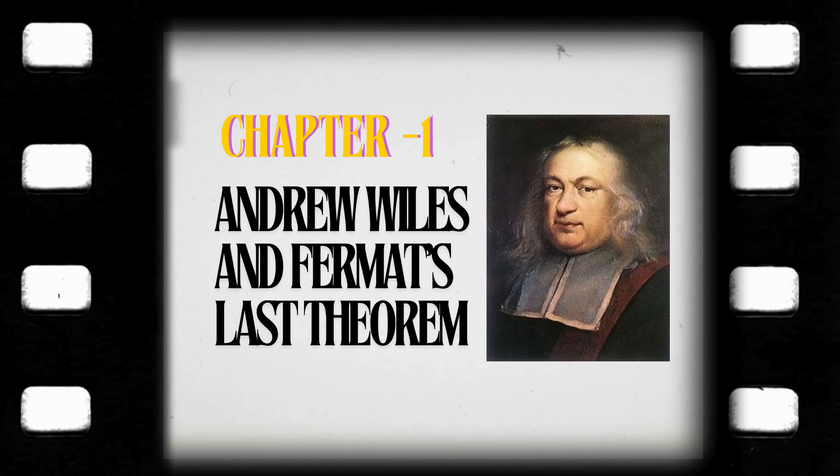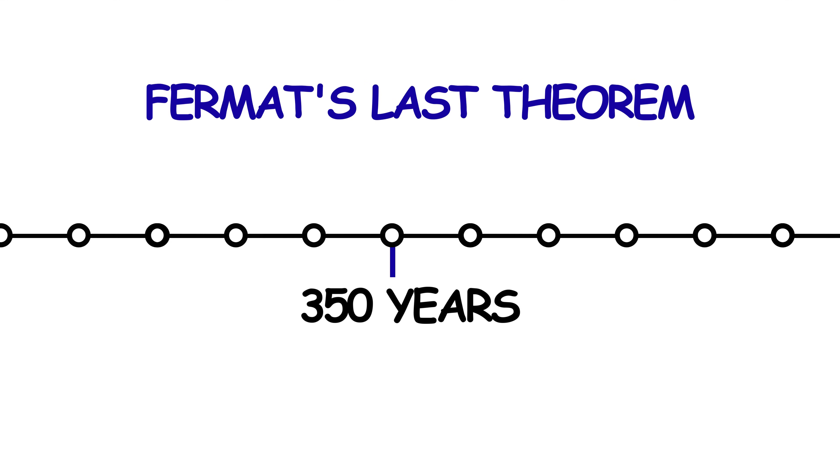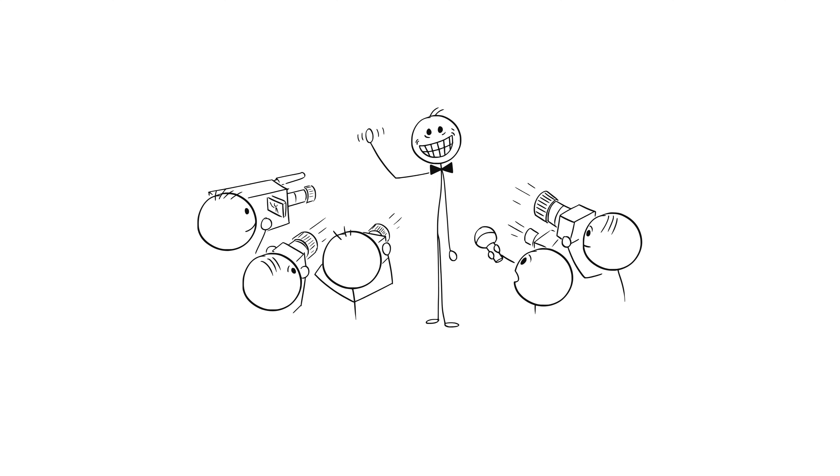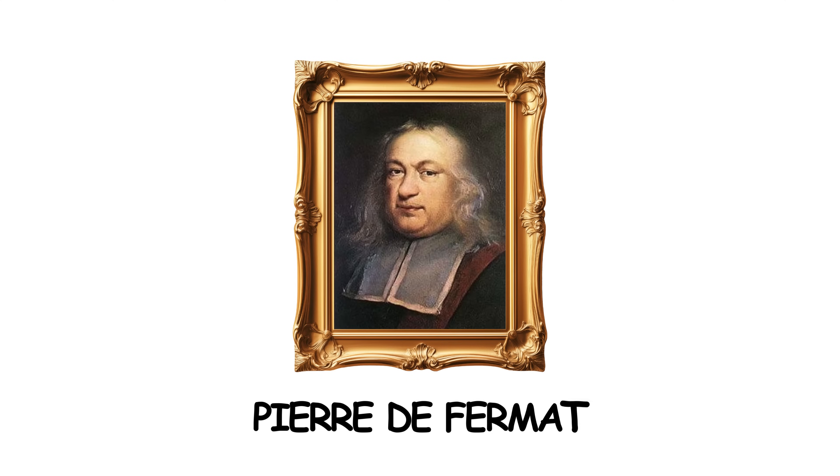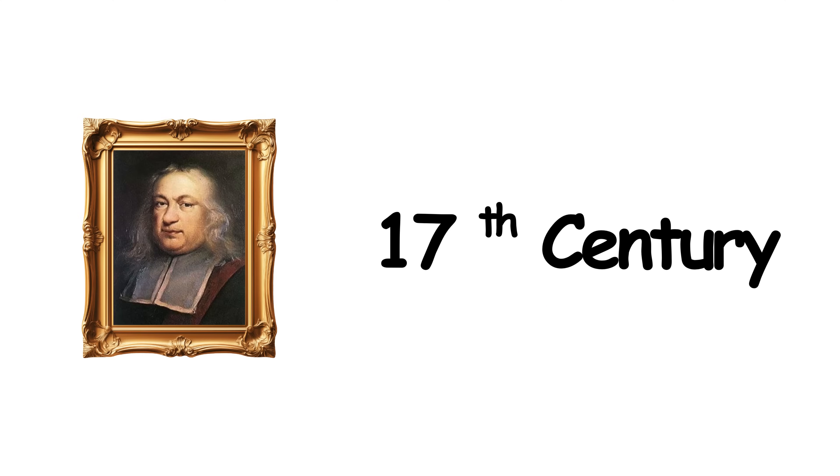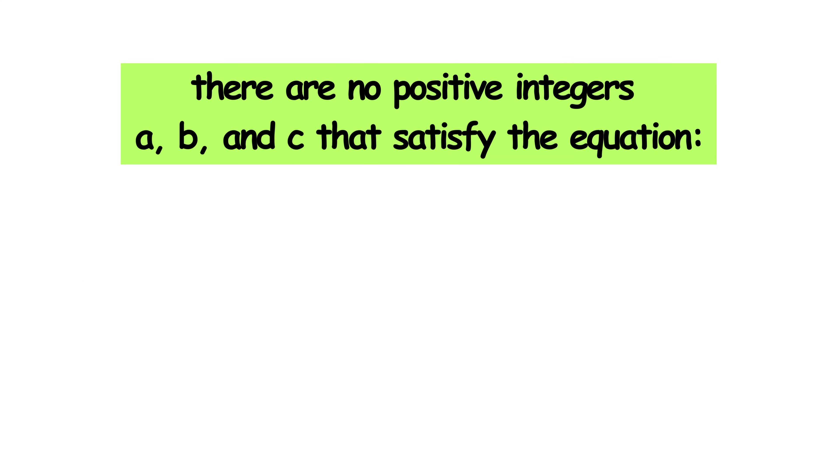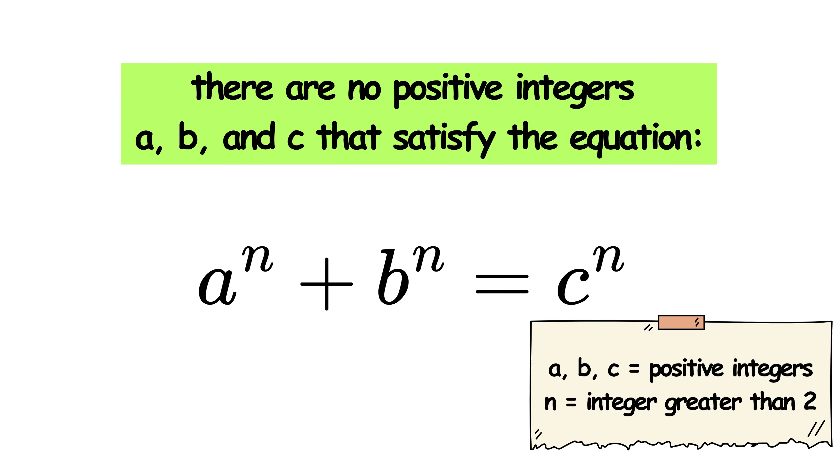Andrew Wiles and Fermat's Last Theorem. For over 350 years, Fermat's Last Theorem was one of the most famous and frustrating problems in mathematics. Formulated by Pierre de Fermat in the 17th century, it stated that there are no positive integers a, b, and c that satisfy the equation a to the n power plus b to the n power equals c to the n power, where a, b, and c are positive integers, and n is an integer greater than two.